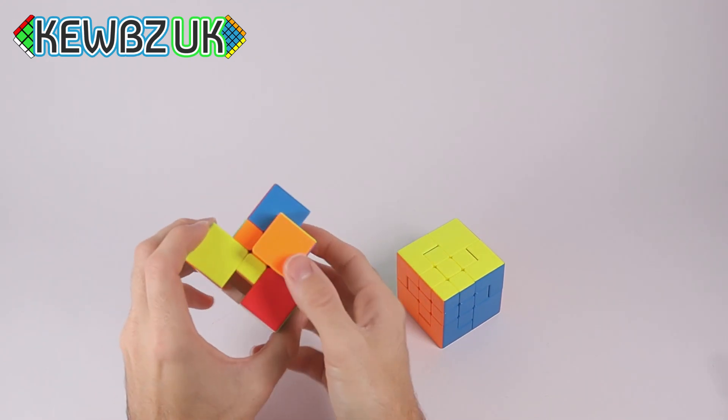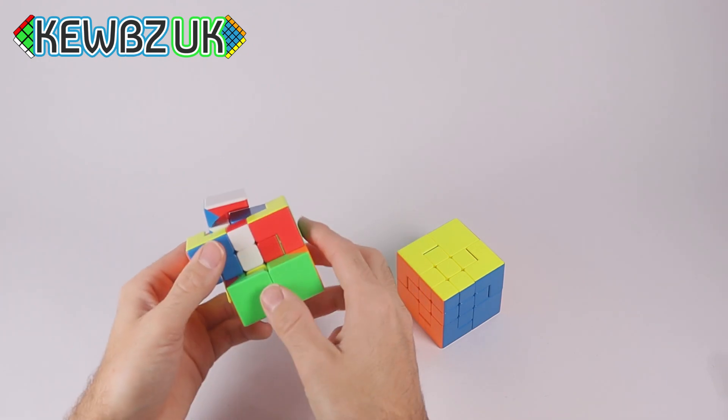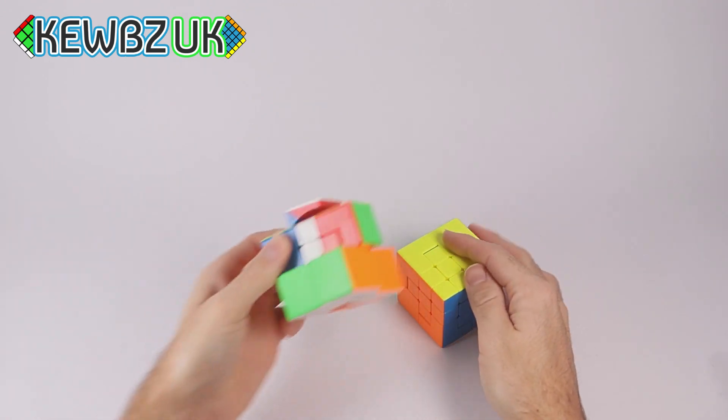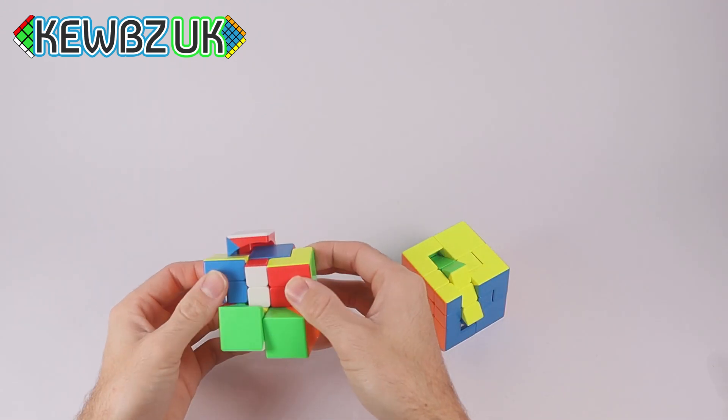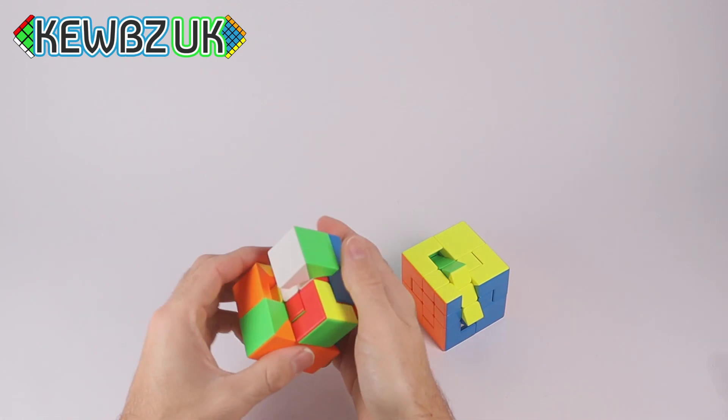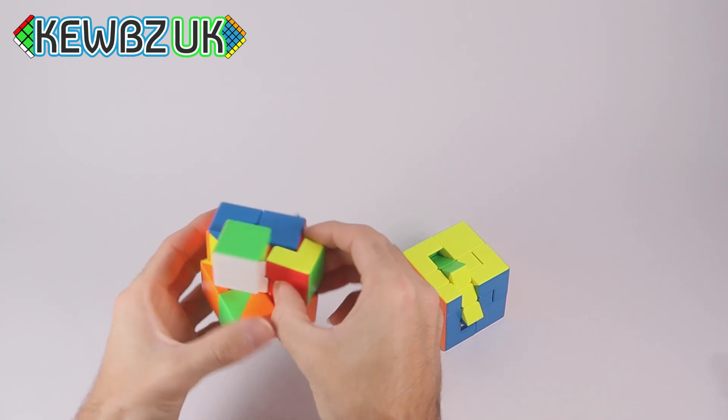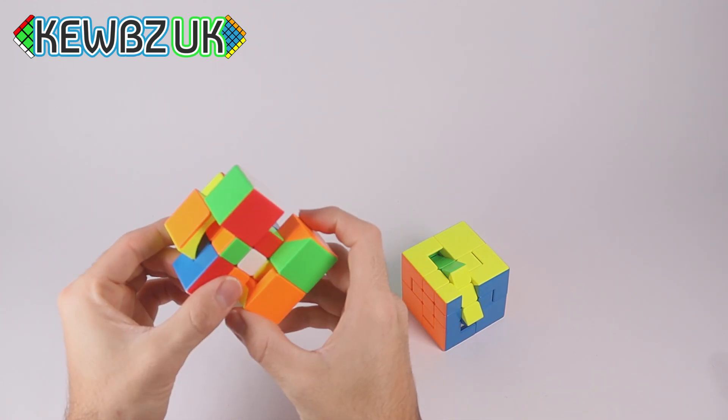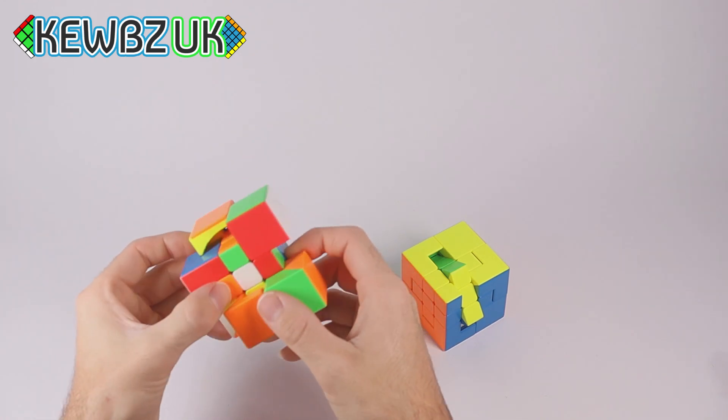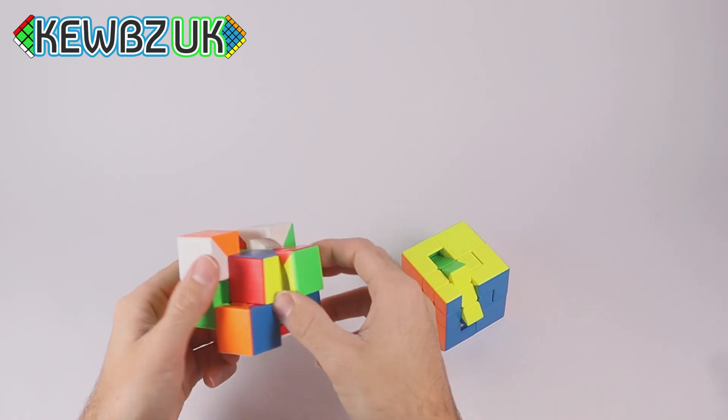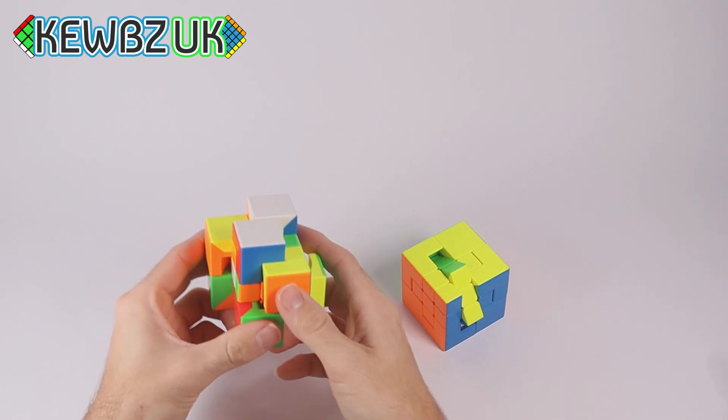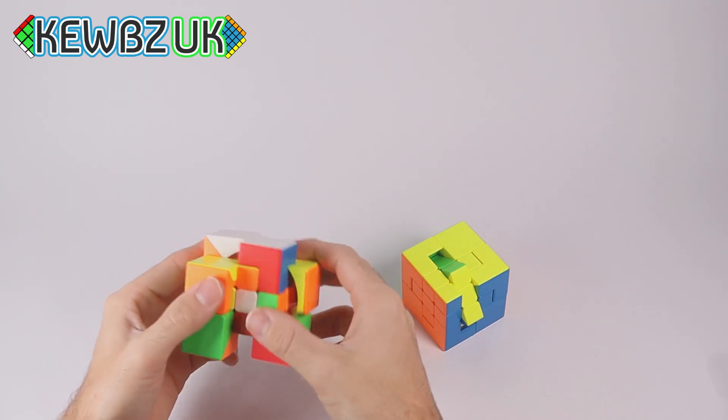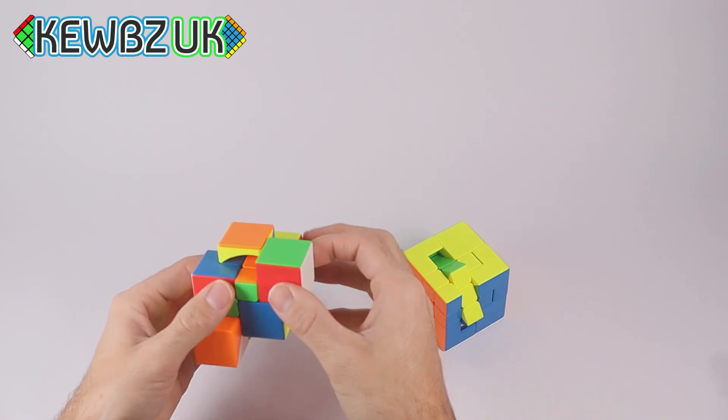And unlike this one, it doesn't look like you can turn that center three by three layer kind of independently. Not like you can on this one. Unless it is internally bandaged somehow. And you might be able to from some sort of orientation or scramble. Anyway, that's what this one looks like scrambled, which looks hideous. But, I'm sure some of you will get a jump straight on that and solve it instantly.